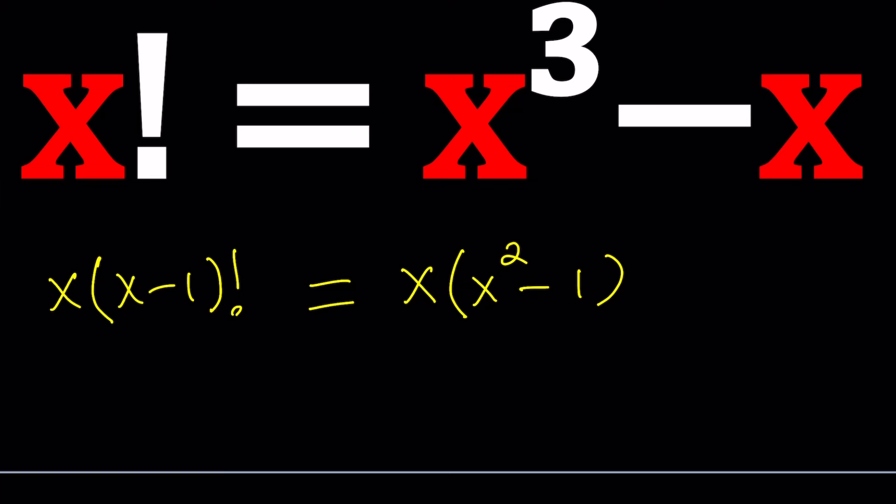At this point, I can go ahead and cancel out the x's, but before that, I need to consider something, which is x equals 0. So it looks like, based on this equation, x equals 0 is a solution, right? Because 0 times something equals 0 times something else. But, the problem is,